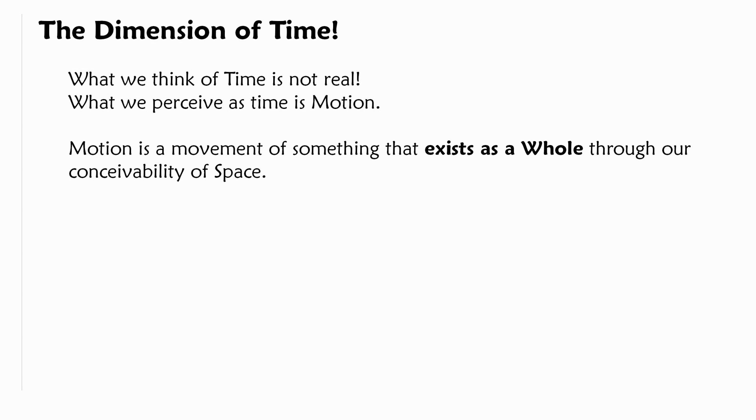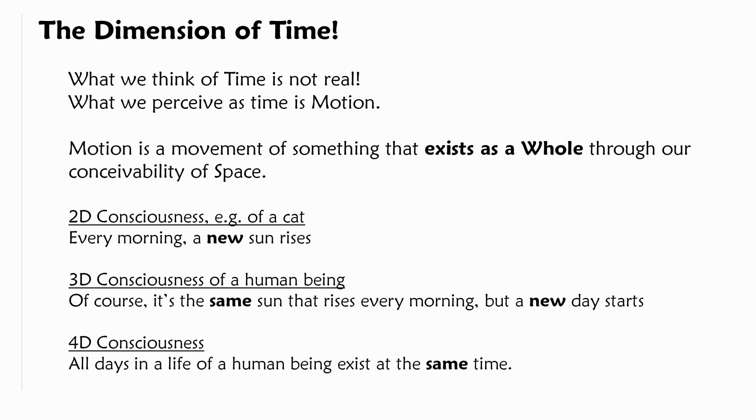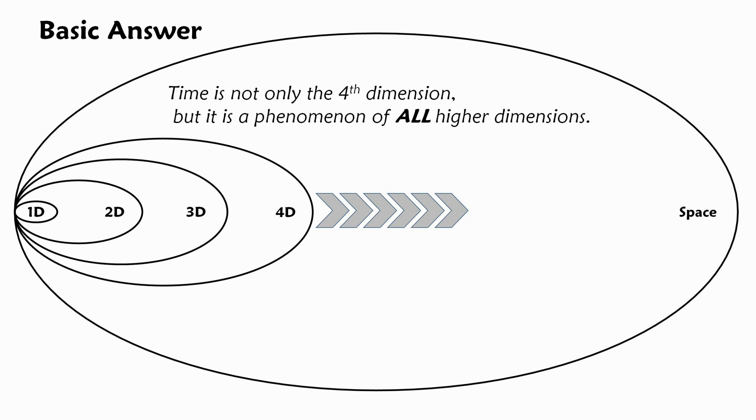So, here's some examples. A 2D consciousness, for example of cat, would say every morning a new sun rises. Then a 3D consciousness of a human being would say, of course, it's the same sun that rises every morning, but it's a new day that starts. And in a 4D consciousness, it would say all days in the life of a human being exist at the same time as a whole. This answers our initial question of time. Time is not only the fourth dimension, it's the phenomenon of all higher dimension. But this is only the basic answer.